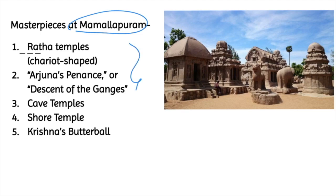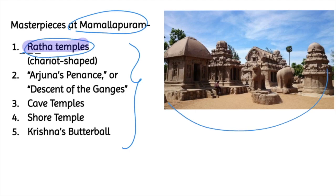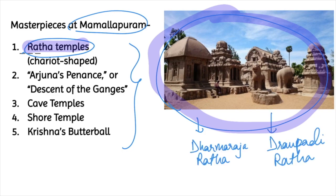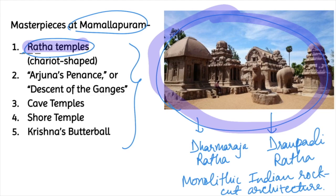We will see five important architectural masterpieces. The first is the Rathas temples — the famous Pancha Rathas, which are named after the five Pandavas and their wife Draupadi. The biggest of these is Dharmaraja Ratha and the smallest is Draupadi Ratha. These Pancha Rathas are examples of monolithic Indian rock-cut architecture.